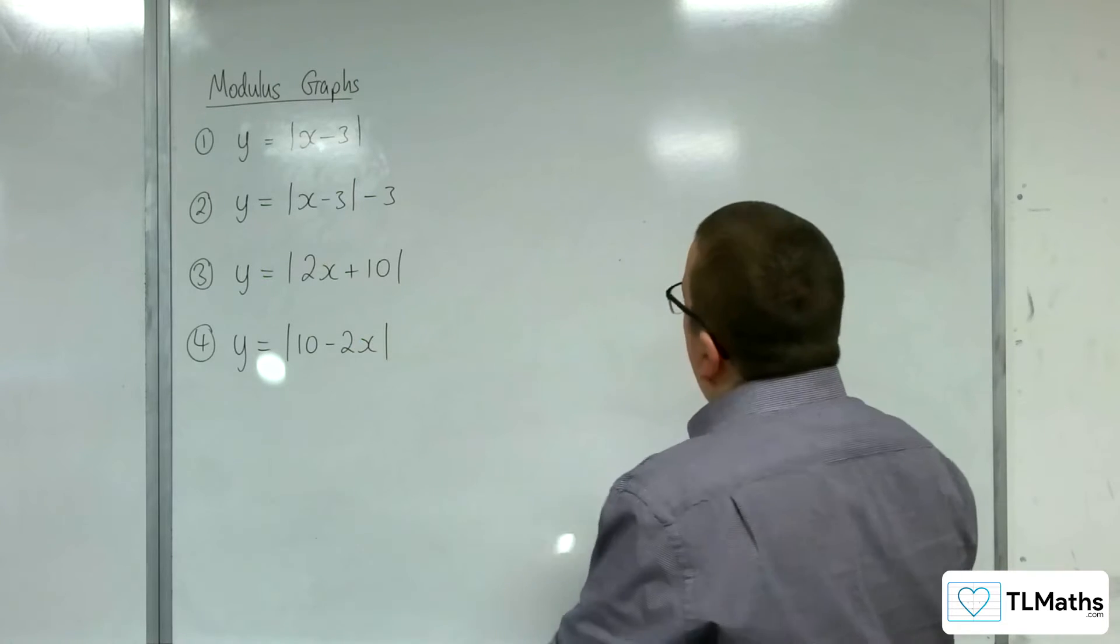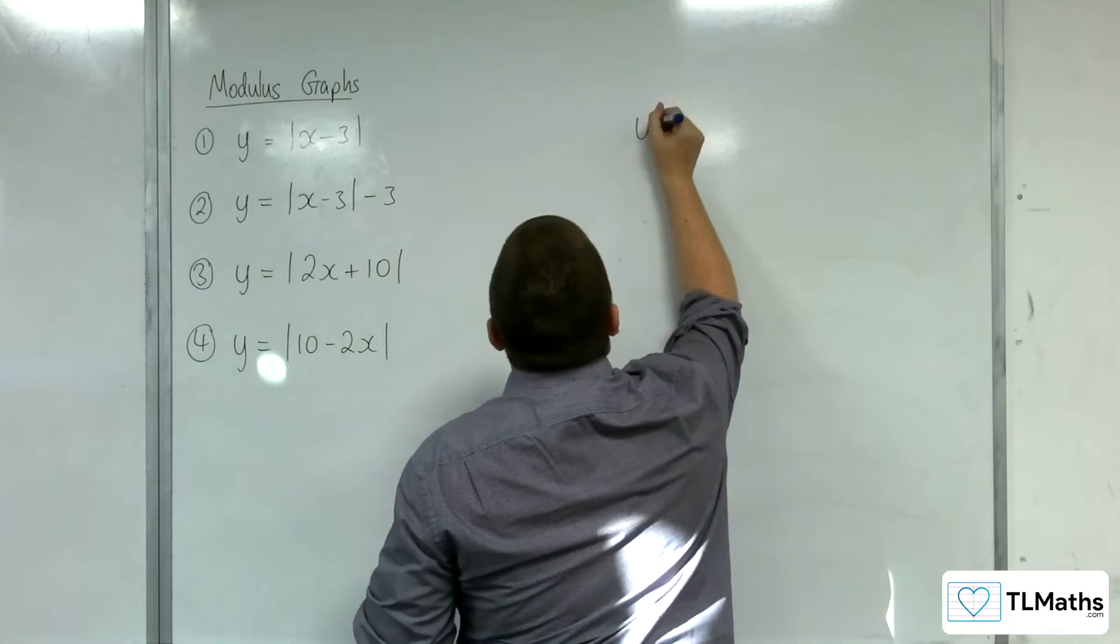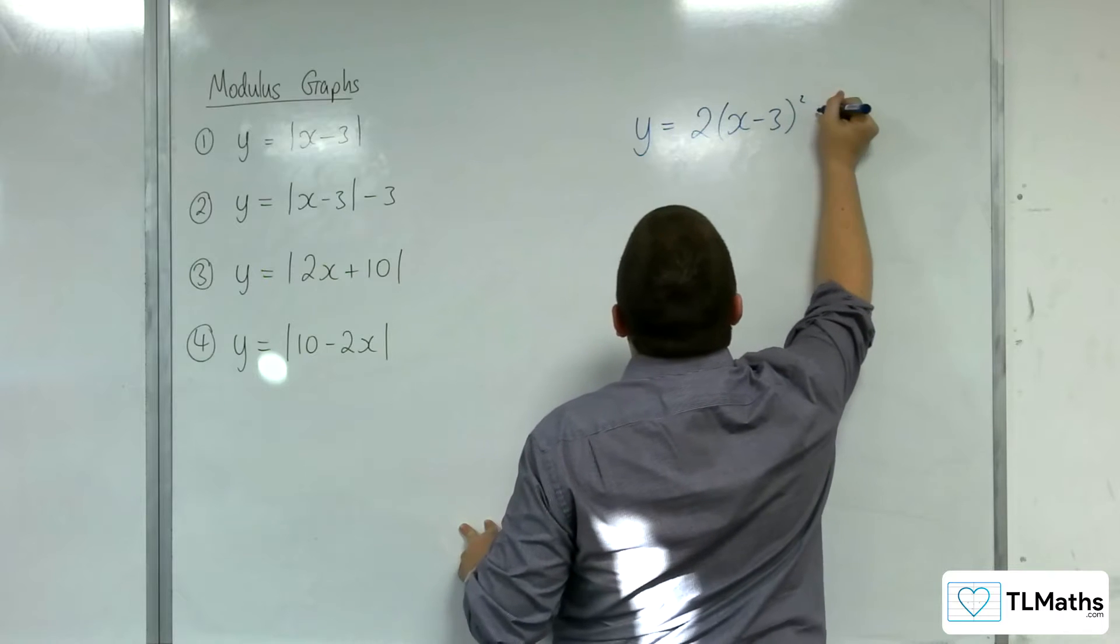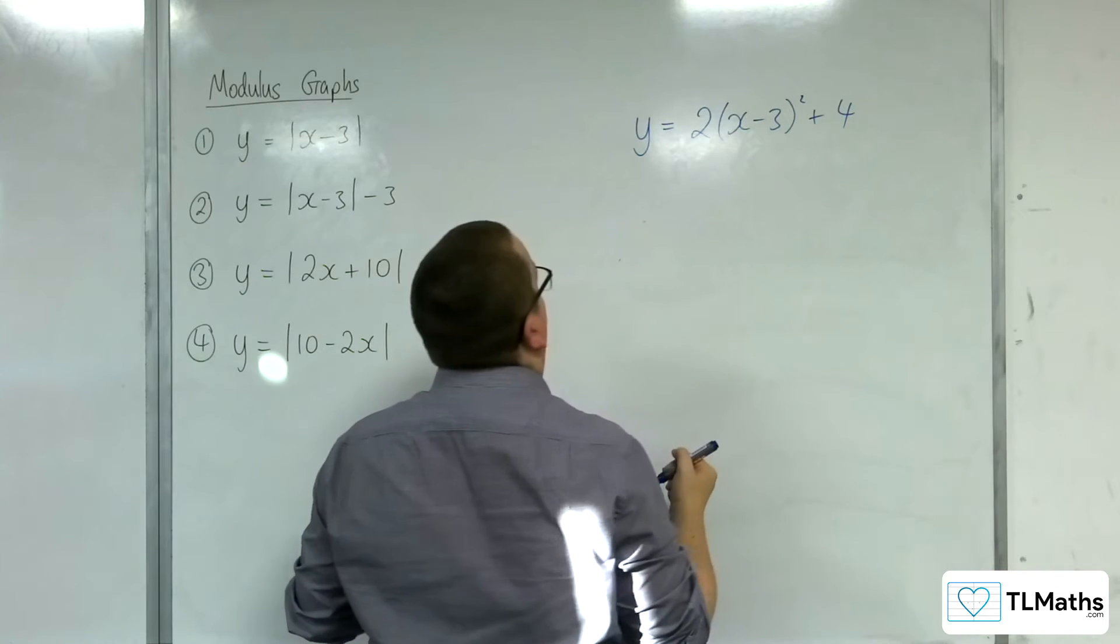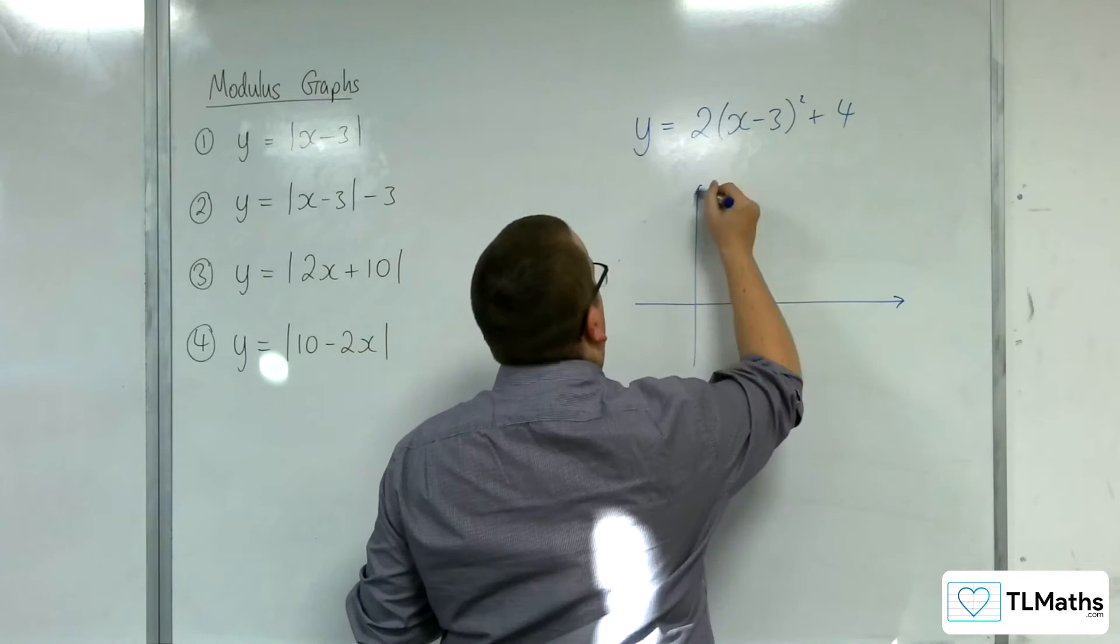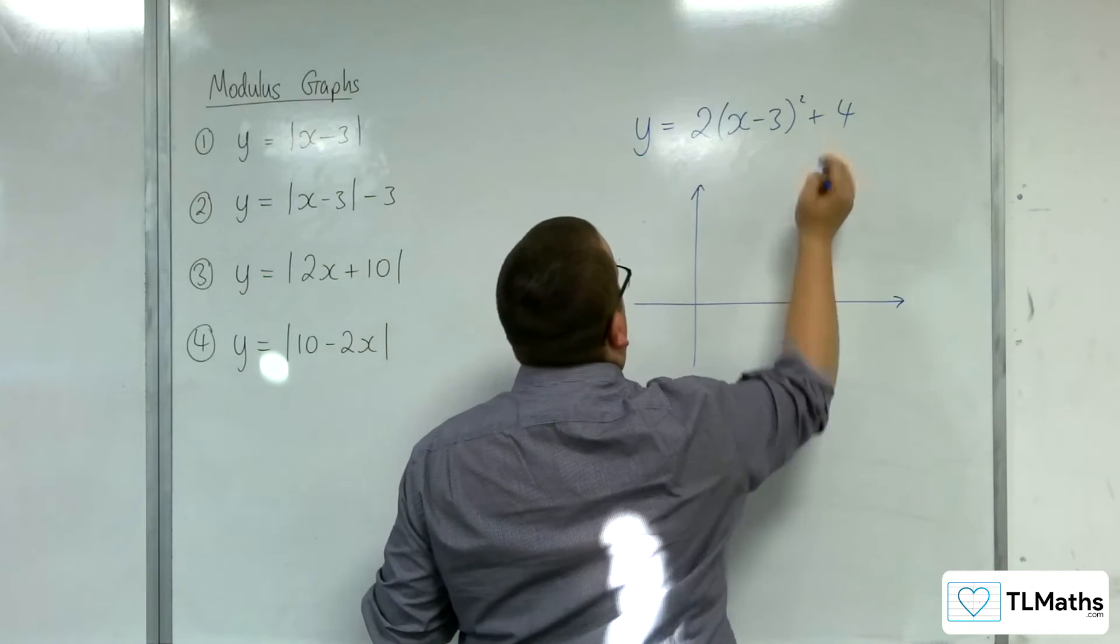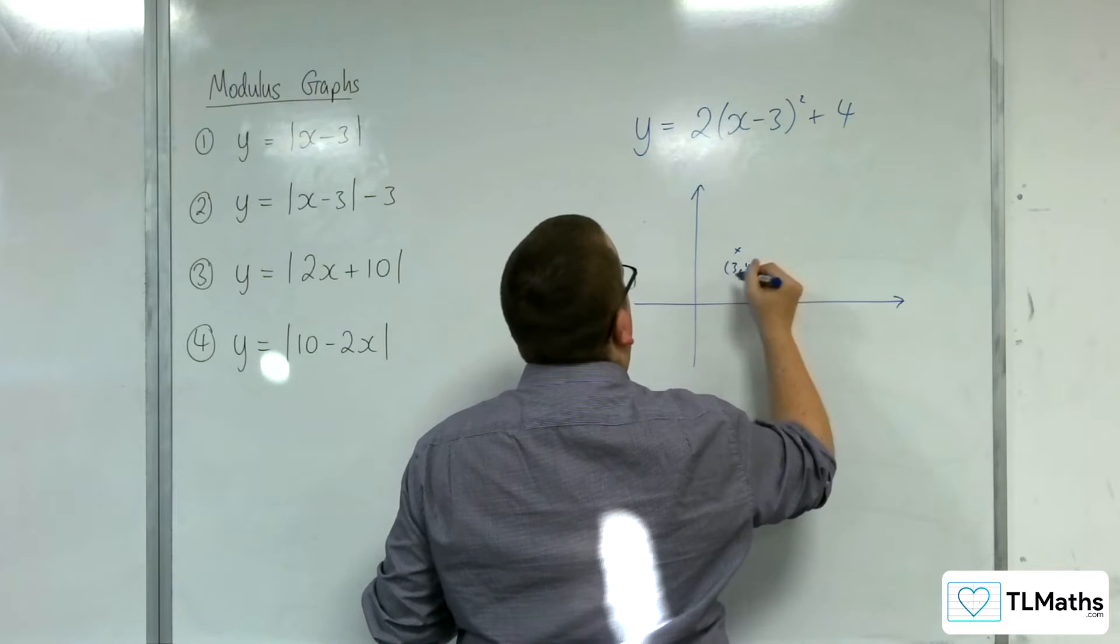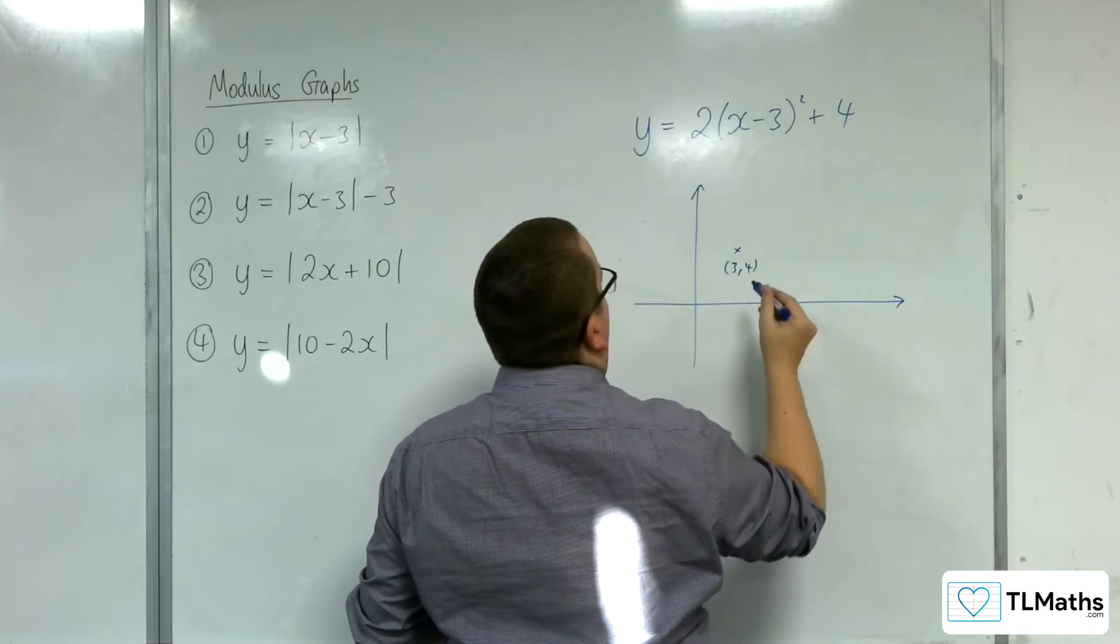So, if I was asking you to sketch y equals 2(x - 3)² + 4, then you should be able to tell me that the coordinates of the vertex is at (3, 4). So there's the vertex, just directly from it being in complete square form.